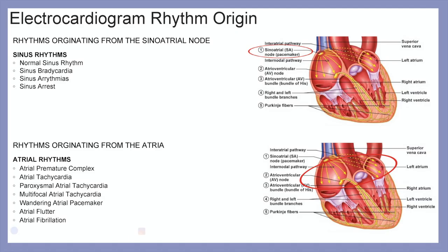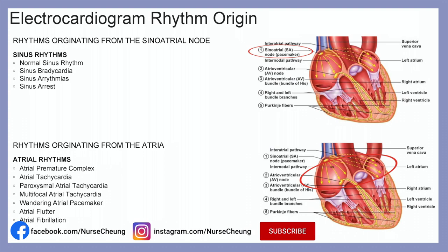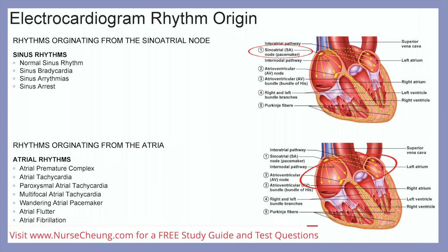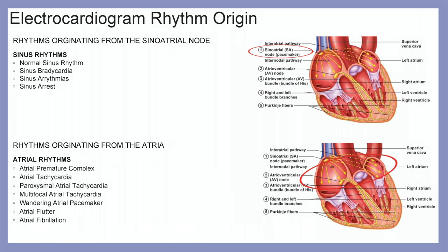Welcome, healthcare professionals. We're continuing with our cardiovascular assessment and electrocardiogram series, discussing cardiac rhythm recognition using methodical review. It's very helpful to understand where our ECG rhythms are originating from in regards to the electrical conduction pathway, so that we know what's working, what's not working, and how to treat it.